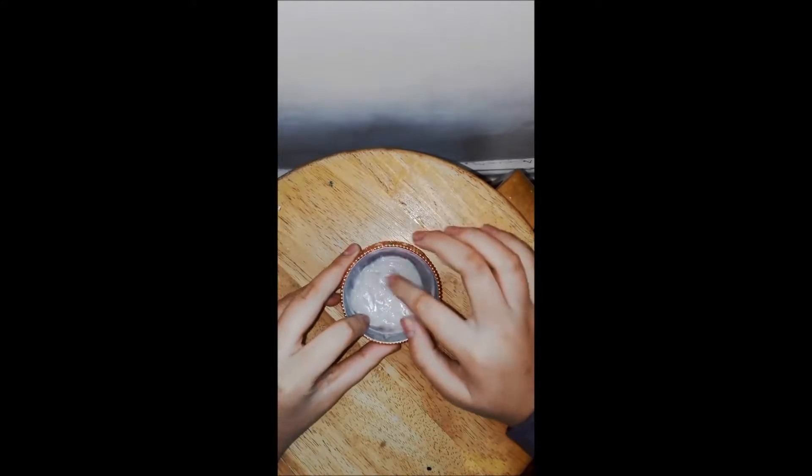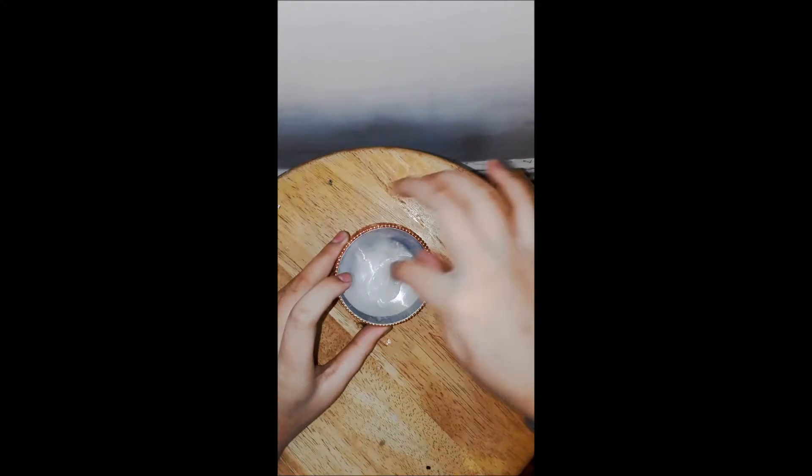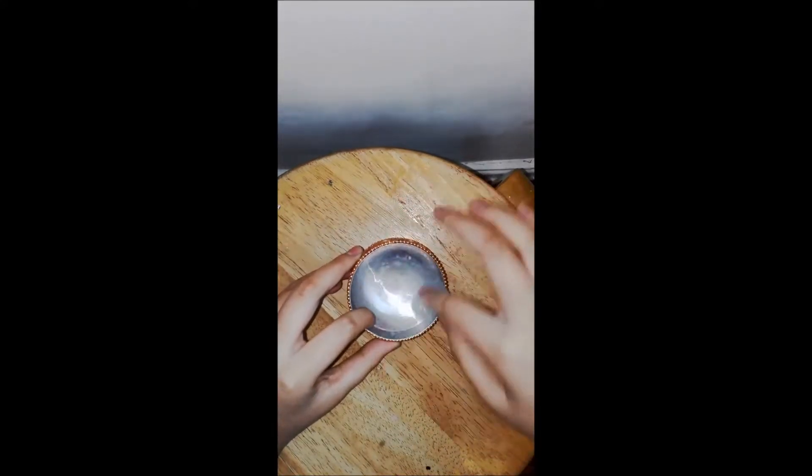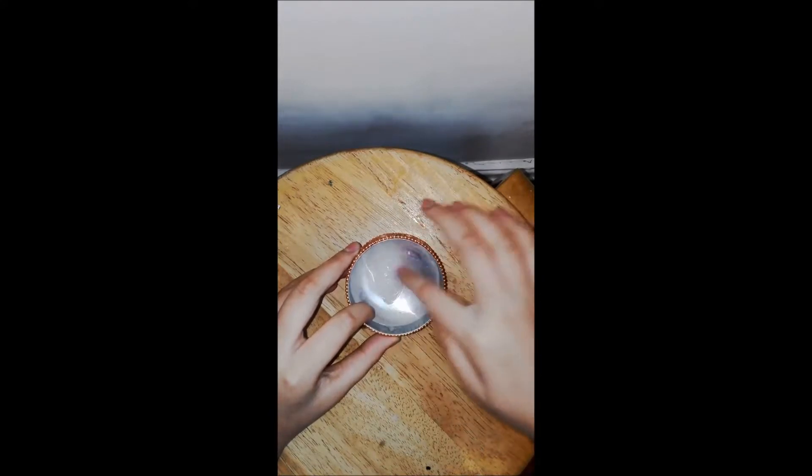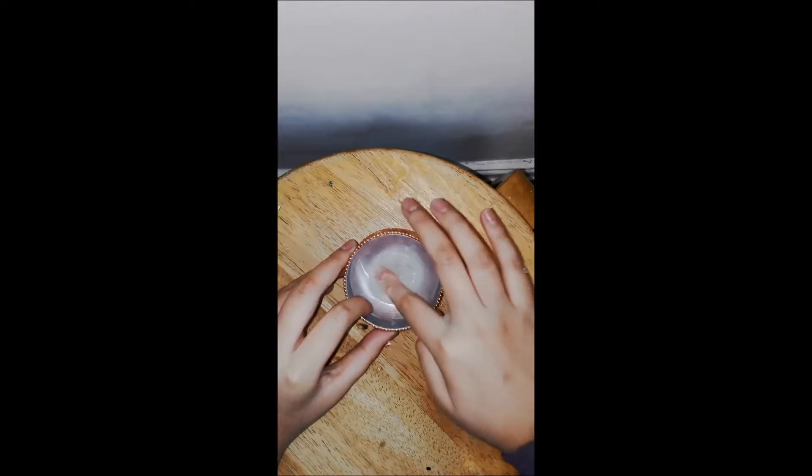So go to our video which will be linked in the description below and learn how to make the clear slime and then come back and finish it off by making your crunchy slime. It doesn't have to be clear slime. You could use white slime, blue slime, whatever color you would like. You should leave it a bit sticky because the beads will make it better.